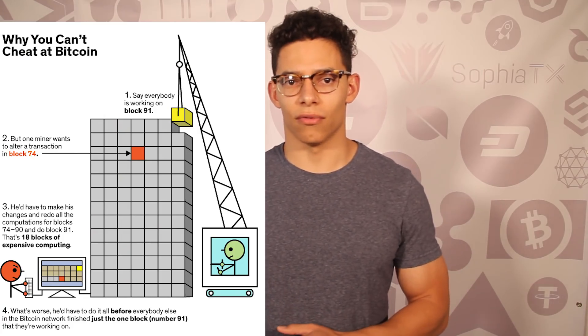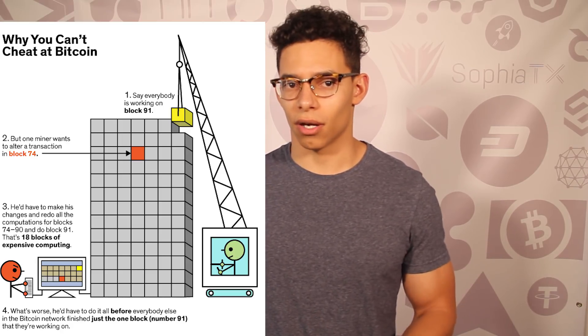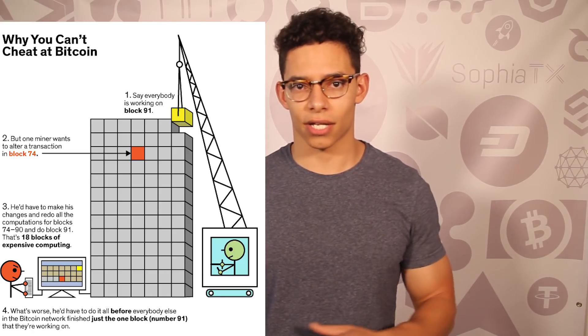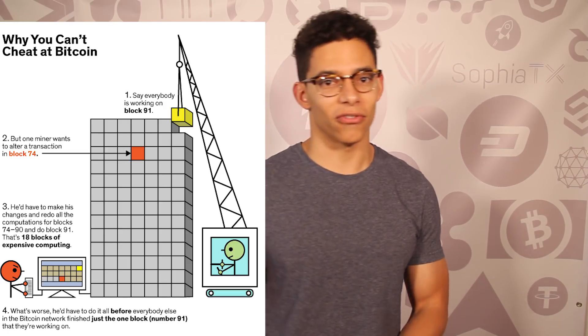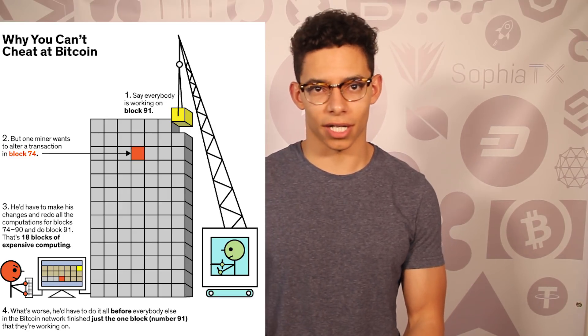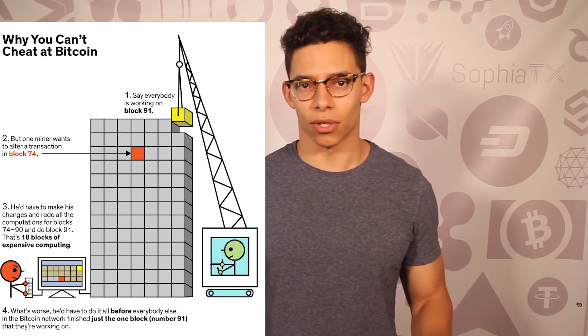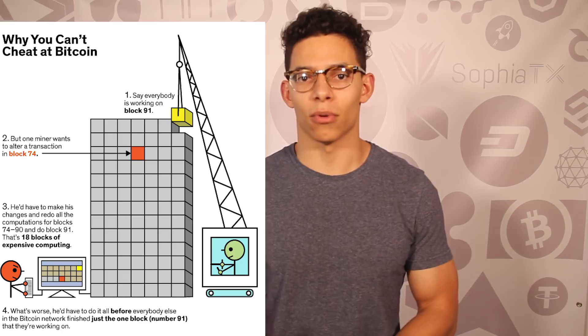Proof of work in Bitcoin is used as a means of processing transactions. In order for an actor to submit the next block to be added to the blockchain, they have to find a solution to a particular mathematical problem. These people are called miners, and the actor most likely to solve the problem first is the one with the most computing power. When solved, a block is mined and the miner gets rewarded with Bitcoin via a block reward and transaction fees. Other nodes check the validity of mined blocks. To cheat the Bitcoin blockchain, a miner wanting to alter a transaction at block height 74 would have to redo all blocks from 74 through 90 before block 91 propagates — showing why blockchain transactions are effectively immutable.